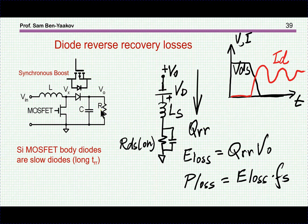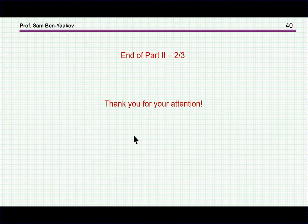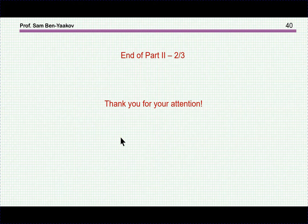Part of this power loss is absorbed by the transistor and part by the diode — both dissipating the extra power. This brings me to the end of part two, which is the second of three sections. Thank you for your attention; I hope you found it of interest and you are welcome to watch part three.